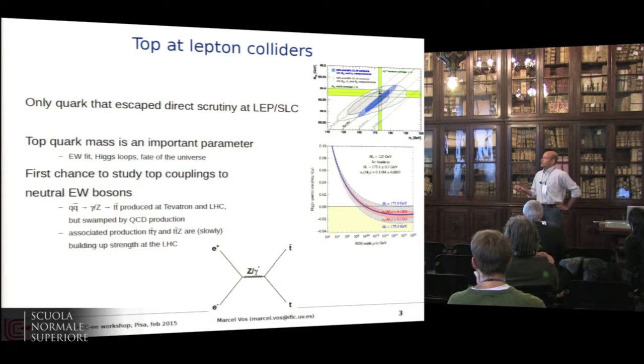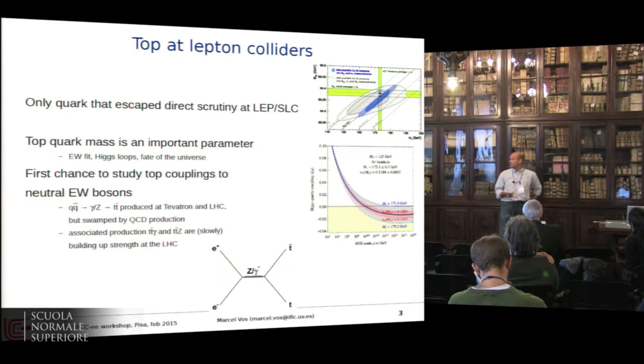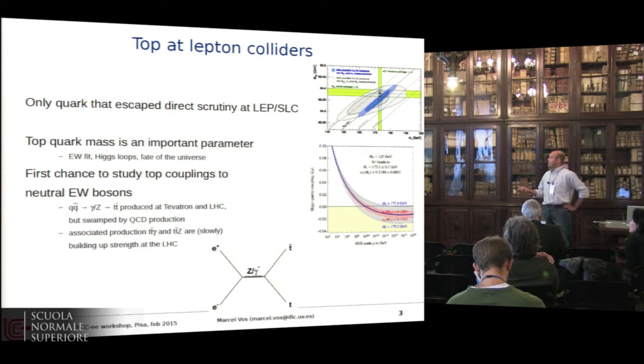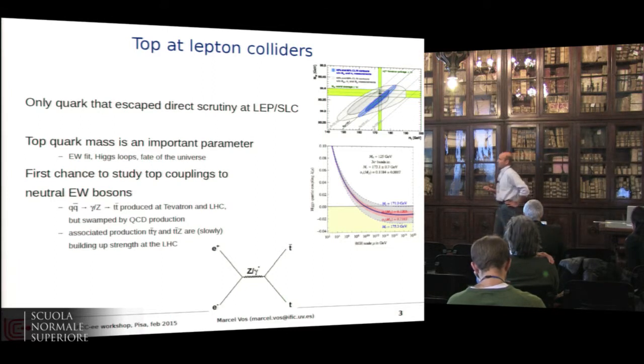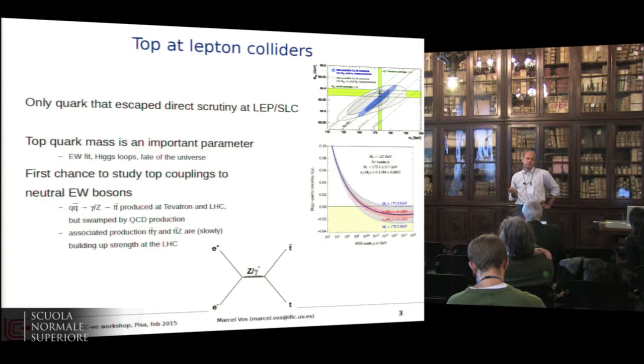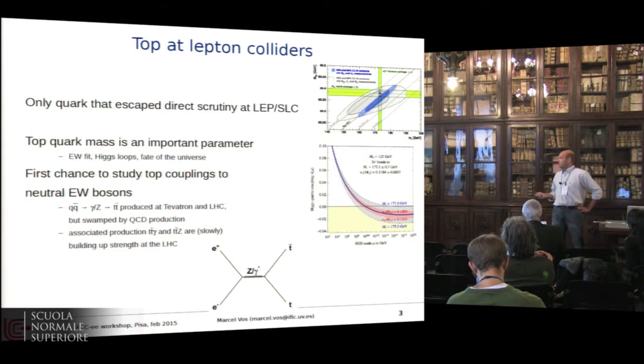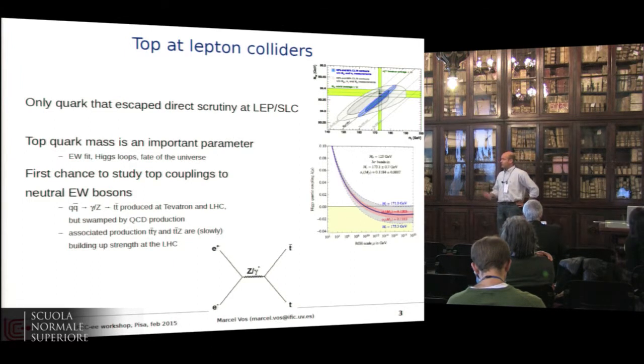We produce, of course, the process at the Tevatron and the LHC, but we have not been able to isolate it in any meaningful way. So this will really be the first time that we see a diagram like this one. Of course, the LHC can access couplings between tops and photons and Zs through associated production, Tt bar gamma and Tt bar Z, and we have seen a few events of those. Slowly, we're getting cross-section indications, I would say, for now.